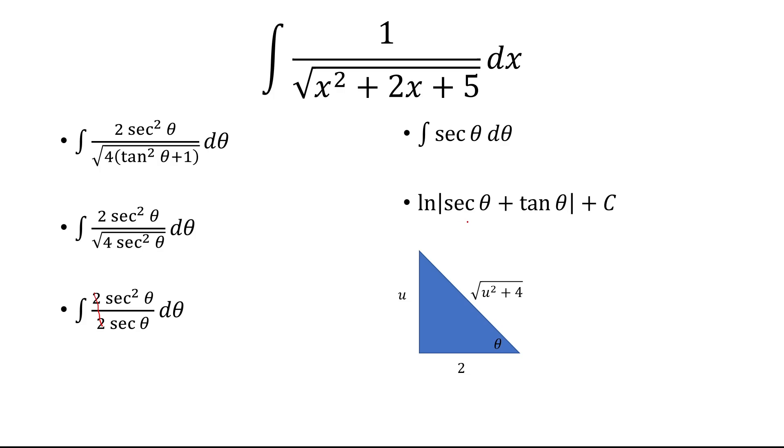Now we need to see what secant and tangent are. Well, in the previous slide, we had 2 tangent theta is equal to u. So tangent theta is u over 2. So that's why I have opposite over adjacent. Opposite is u, adjacent is 2. And then Pythagorean theorem says this is just the square root of u squared plus 4.